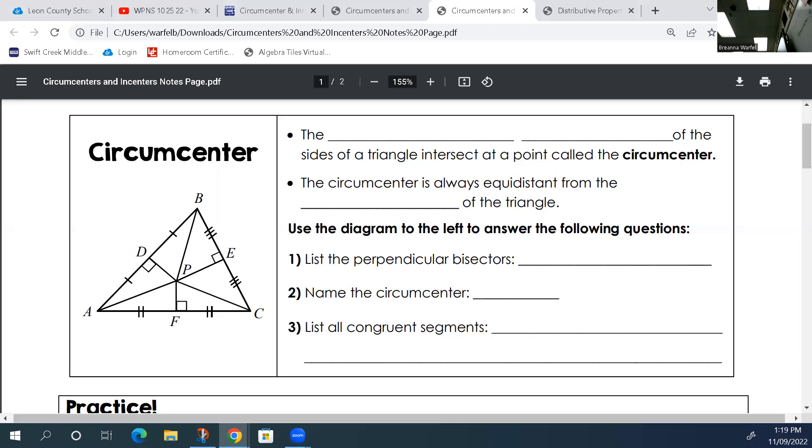When you have the circumcenter, you know a few things. In number one, it says list the perpendicular bisectors. So DP is a perpendicular bisector to BA, PE is a perpendicular bisector to BC, and then PF is a perpendicular bisector to AC. The circumcenter, number two is P.